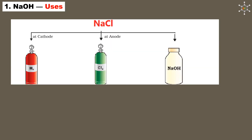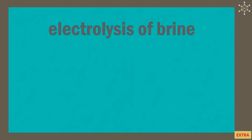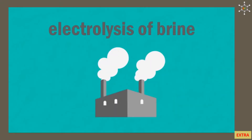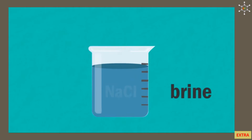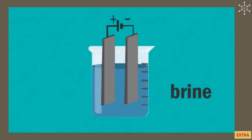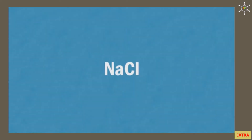All three products of the chloralkali process are of great commercial use. Electrolysis of brine is an industrial process carried out on a large scale, but it can also be studied in the laboratory. Brine is a saturated solution of sodium chloride. Carbon electrodes are used so the electrodes do not become part of the reaction.